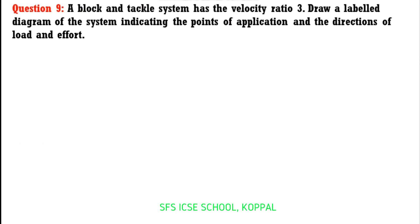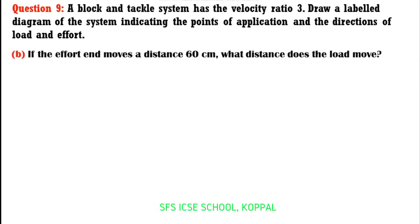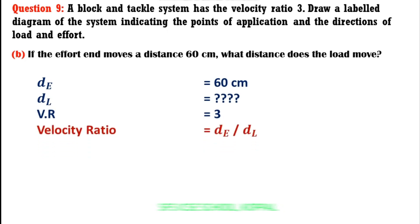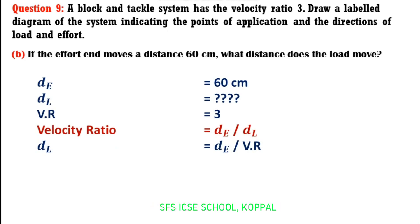Part B: If the effort end moves a distance of 60 cm, what distance does the load move? Distance moved by effort is 60 cm. Using velocity ratio equals distance moved by effort divided by distance moved by load, distance moved by load equals 60 divided by 3, which equals 20 cm.